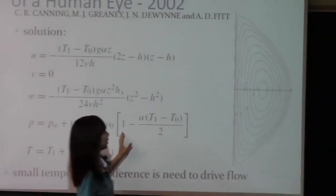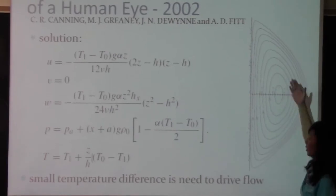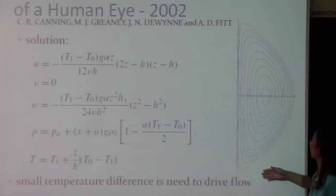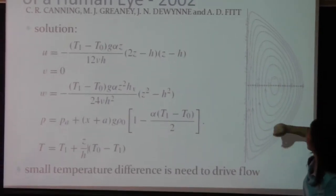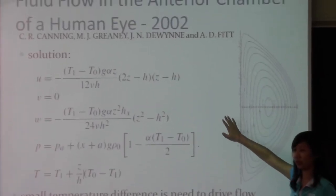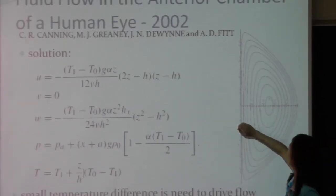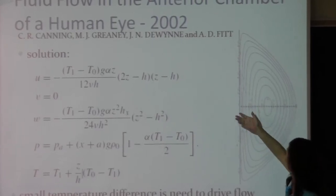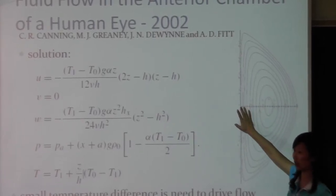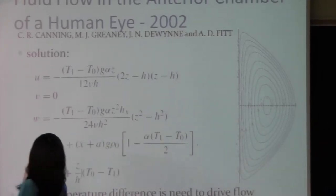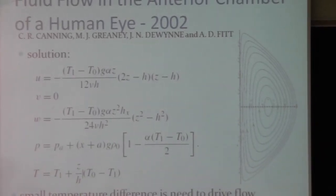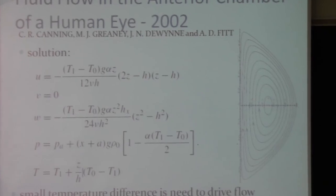Now, this is what they got, this is their solution. So as you can see, basically, their streamline, this is a cross-section of the anterior chamber of the eye, so the flow goes in this direction. In which case, it rises near the back of the eye, which is, really, well, here, like, it's hotter here, so therefore, right, and then here it comes down. And they were also concluded that small temperature difference can drive this flow. Now, this is only a simple...